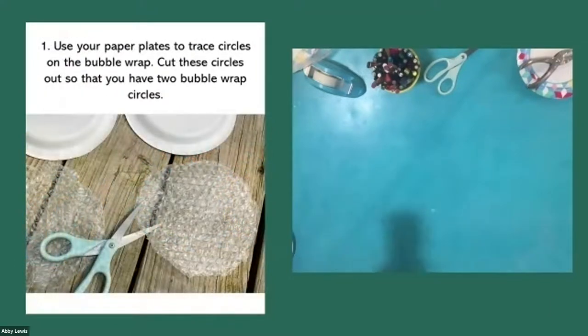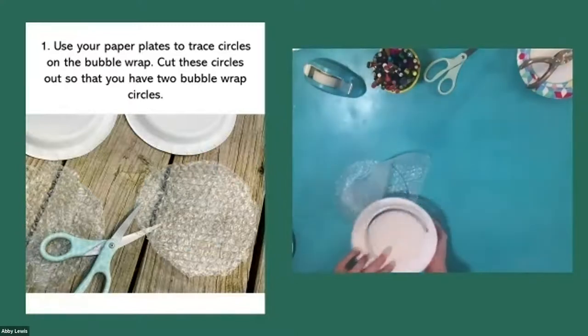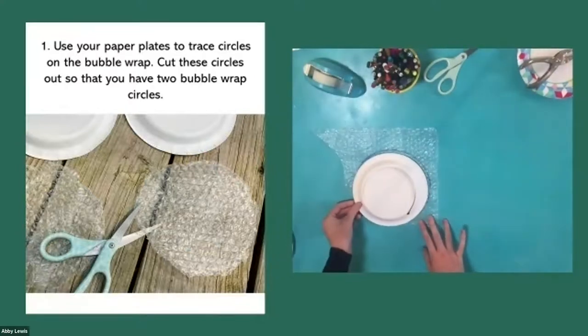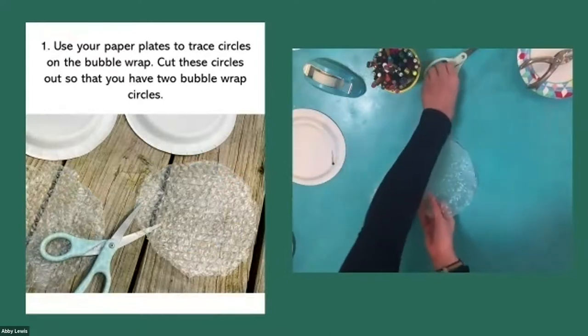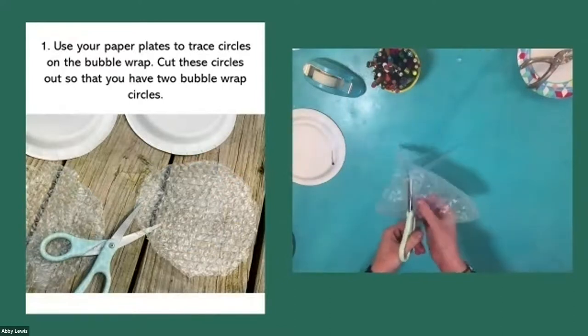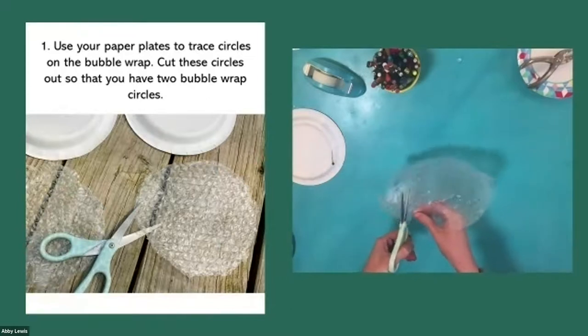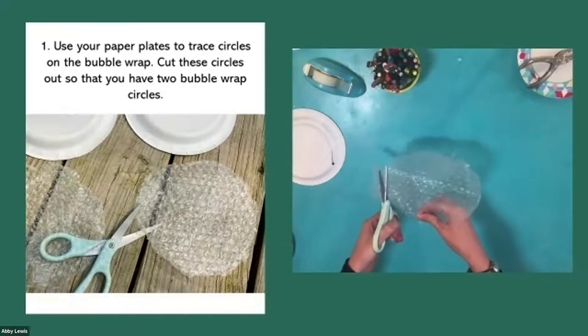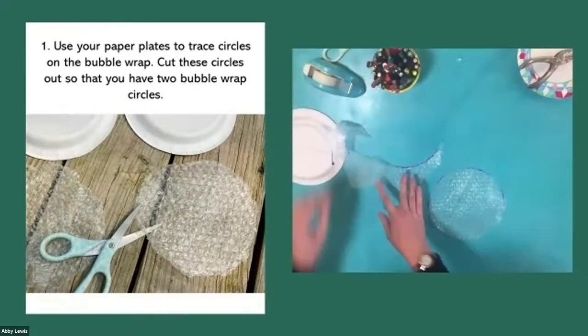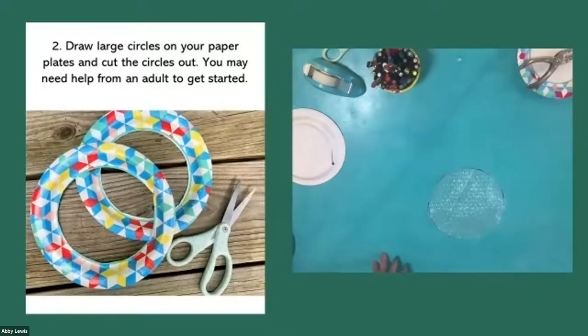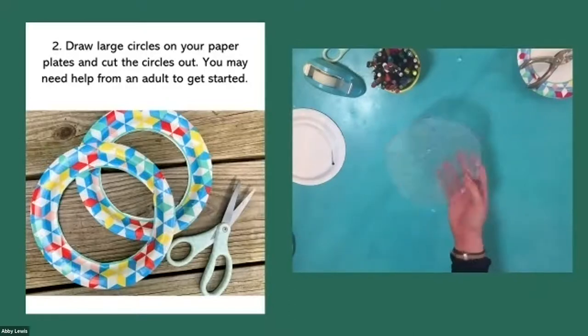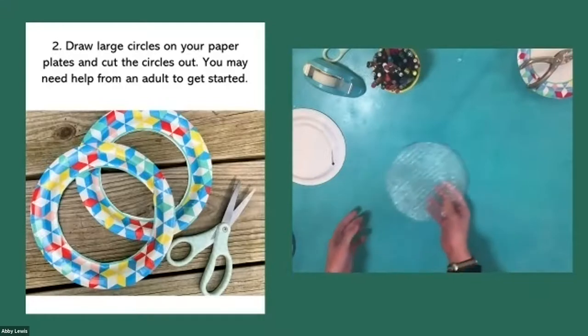First we're going to use our paper plates to trace circles around the bubble wrap that you have. See how I've already traced that circle? So you're going to trace it around the bubble wrap and then you're just going to cut the bubble wrap out. Bubble wrap can be kind of tricky to cut so don't worry if it's not perfect or if you need to tear some things that's totally fine. And we always recommend reusing old bubble wrap because you can get some use out of bubble wrap before you cut it up and make your pair of fly eyes.